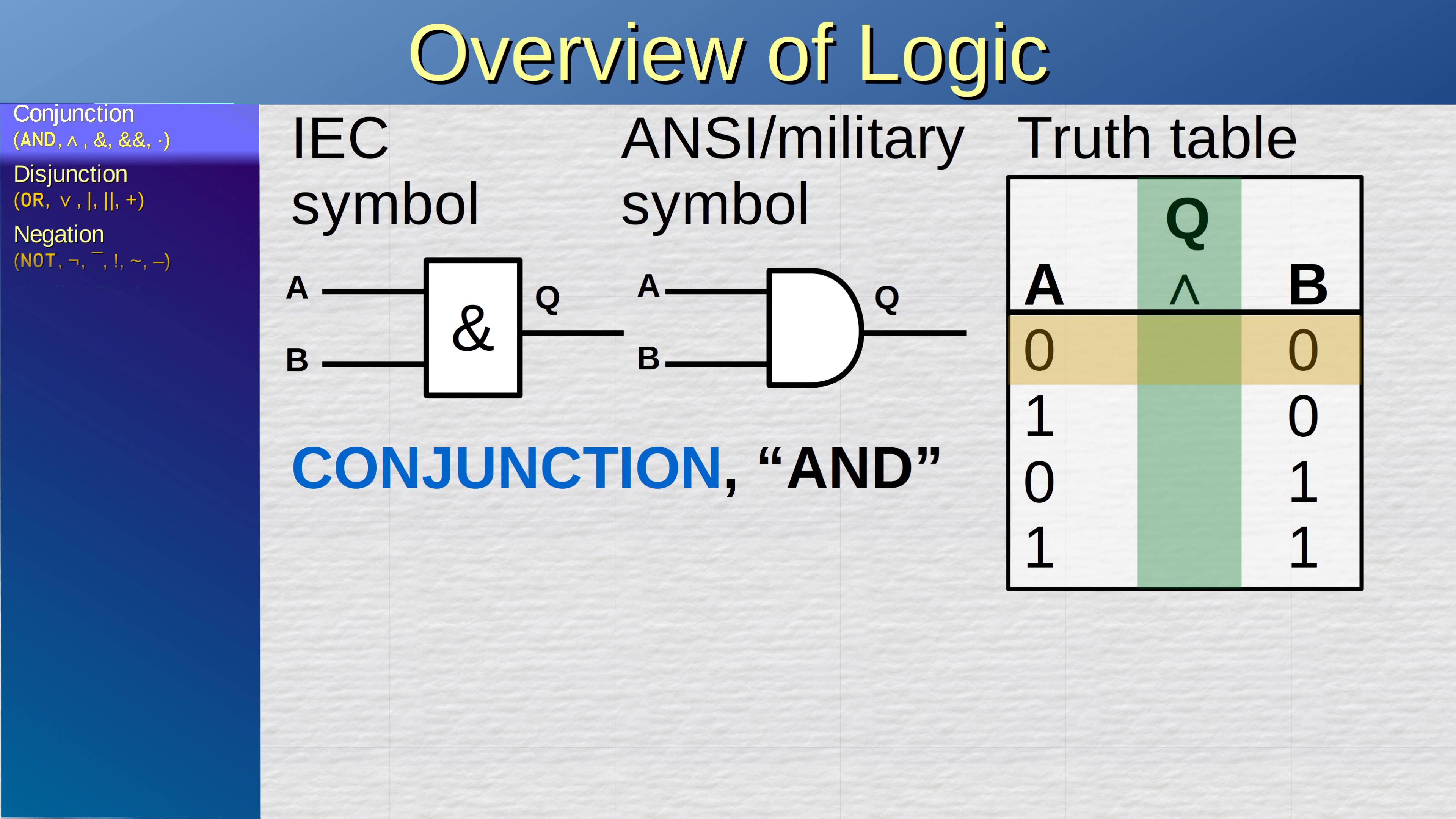If no power flows in, output Q emits no power. If power flows in from input A, output Q emits no power. If power flows in from input B, output Q emits no power. If power flows in from both A and B, then power flows out from output Q. In other words, power flows out if power flows in from all inputs.